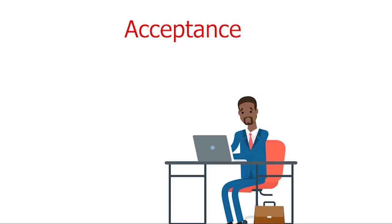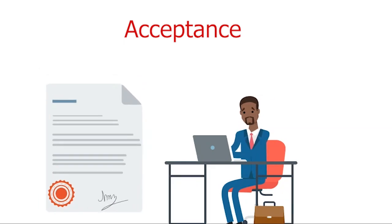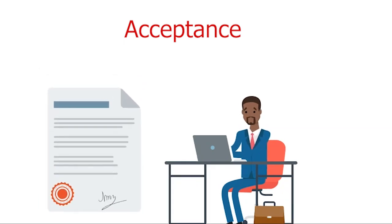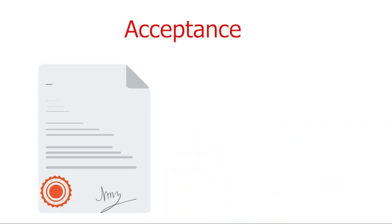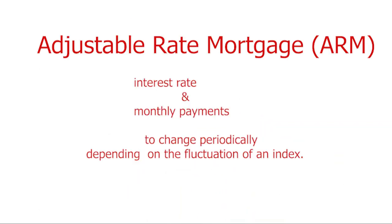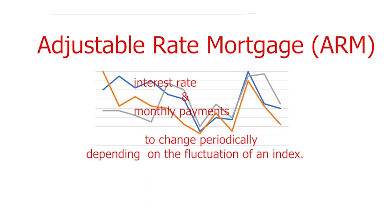Acceptance: this is a term that signifies that you agree, usually in writing, to the terms of a contract. Adjustable Rate Mortgage, ARM: an adjustable rate mortgage is a mortgage term that allows your interest rate as well as your monthly payments to change periodically depending on the fluctuation of an index.